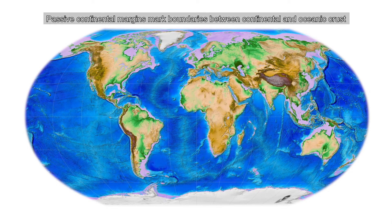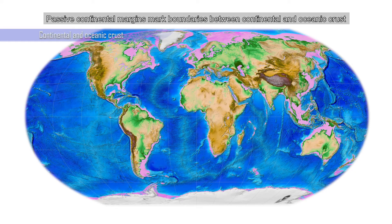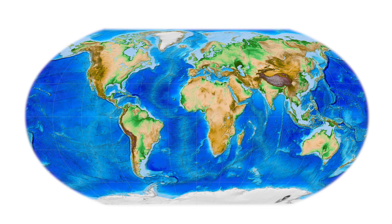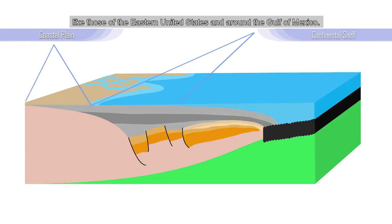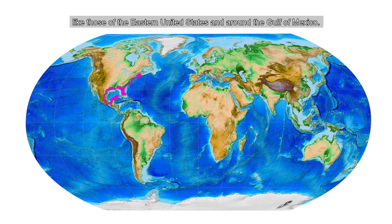Passive continental margins mark boundaries between continental and oceanic crust. Passive continental margins lie beneath continental shelves and coastal plains, like those of the eastern United States and around the Gulf of Mexico.